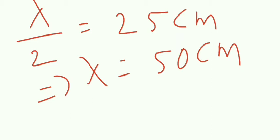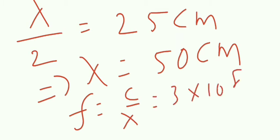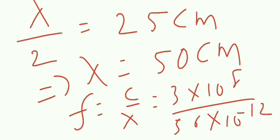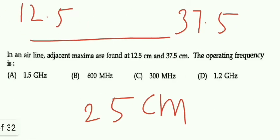Lambda is equal to 50 centimetre. They ask the frequency. Frequency is equal to C by lambda, so that is 3 into 10 power 8 divided by 50 into 10 power minus 2. That will give 600 megahertz. So option B is the right answer — 600 megahertz is the correct answer.